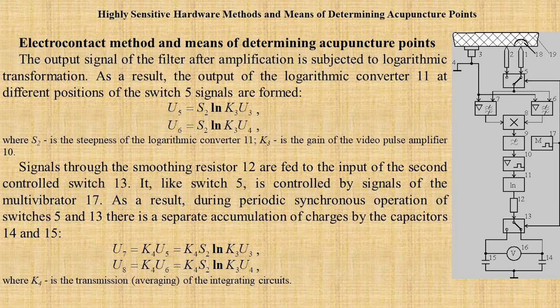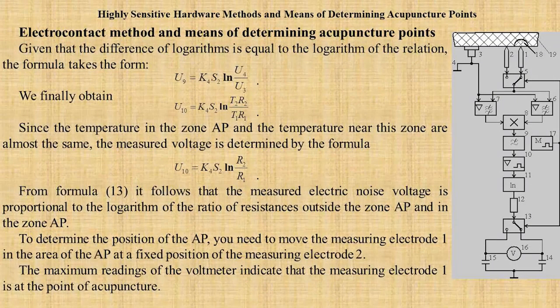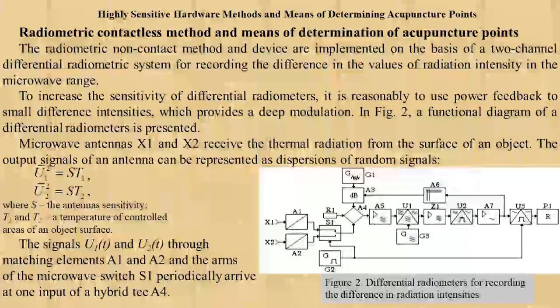As a result, at the output of the logarithmic converter 11, signals are formed at different positions of the switch 5. Slide 8. Given that the difference of logarithms is equal to the logarithm of the ratio, the formula takes the form. Since the temperature in the acupuncture point zone and the temperature in the reference zone are almost the same, the measured voltage is determined by the formula U10. Slide 9.